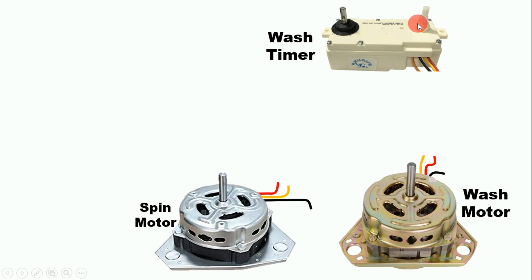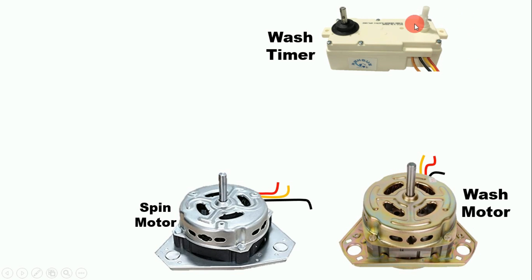In this wash timer you will find two selector switches. Two selector switches are provided because if you don't want to rotate the drum through the timer and want to rotate manually, you can use the selector switch to rotate in one direction or the other. There is also a selector switch for setting the timer. In some washing machines you will find only one selector switch for the timer, with no option for manual rotation.